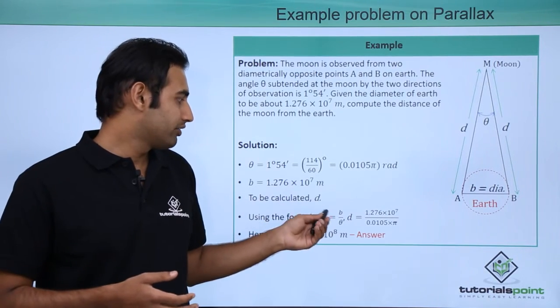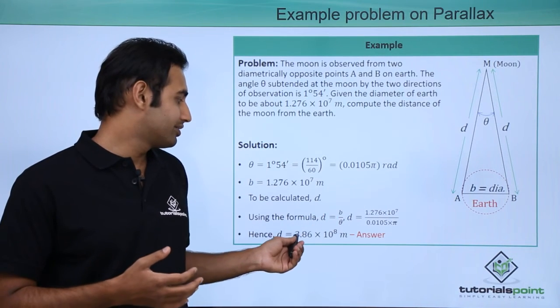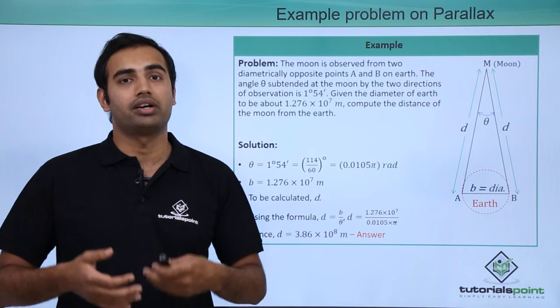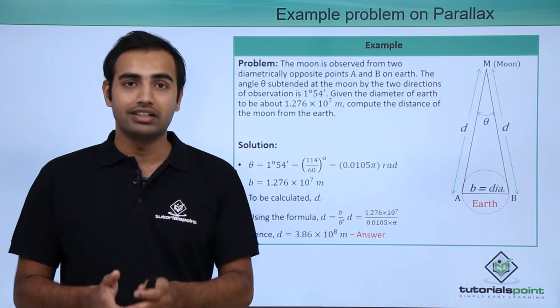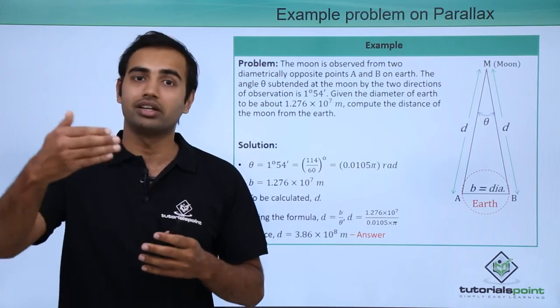Now everything is given to me, then I'll apply the formula directly and once I do that the result that I obtain is 3.86 into 10 raised to power 8 meters. Scientists many times use this method in order to estimate astronomically long lengths.